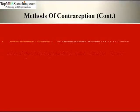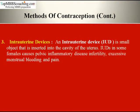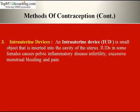Next is intrauterine devices (IUDs). An IUD is a small object inserted into the cavity of the uterus. In some females, IUDs can cause pelvic inflammatory disease, infertility, excessive menstrual bleeding and pain. IUDs are also called loops, spirals, rings, bones, or shields.